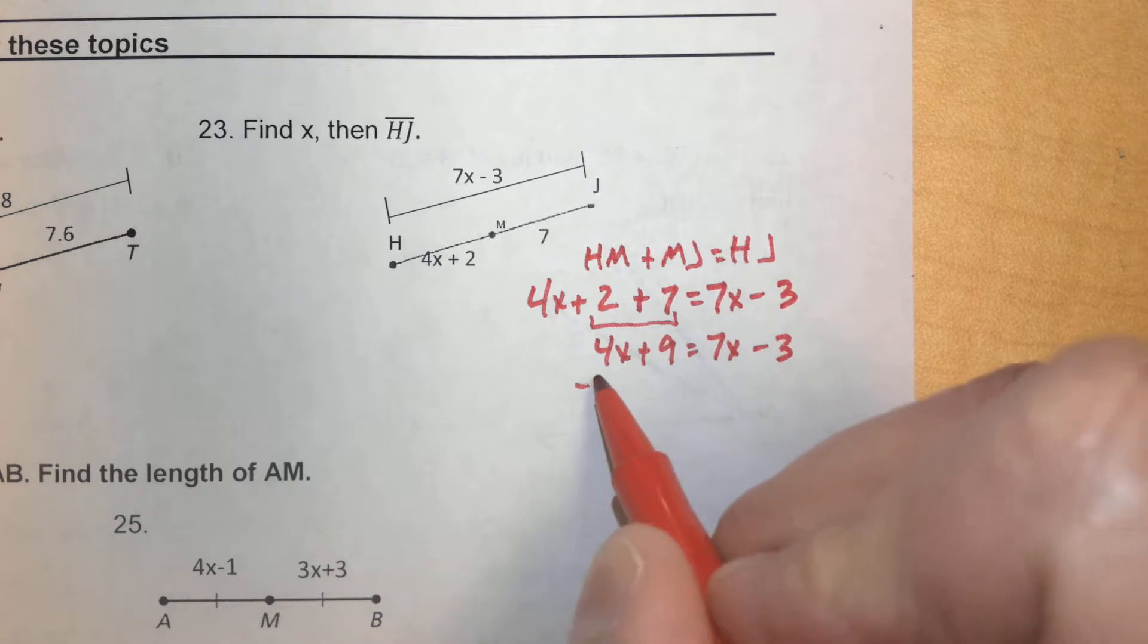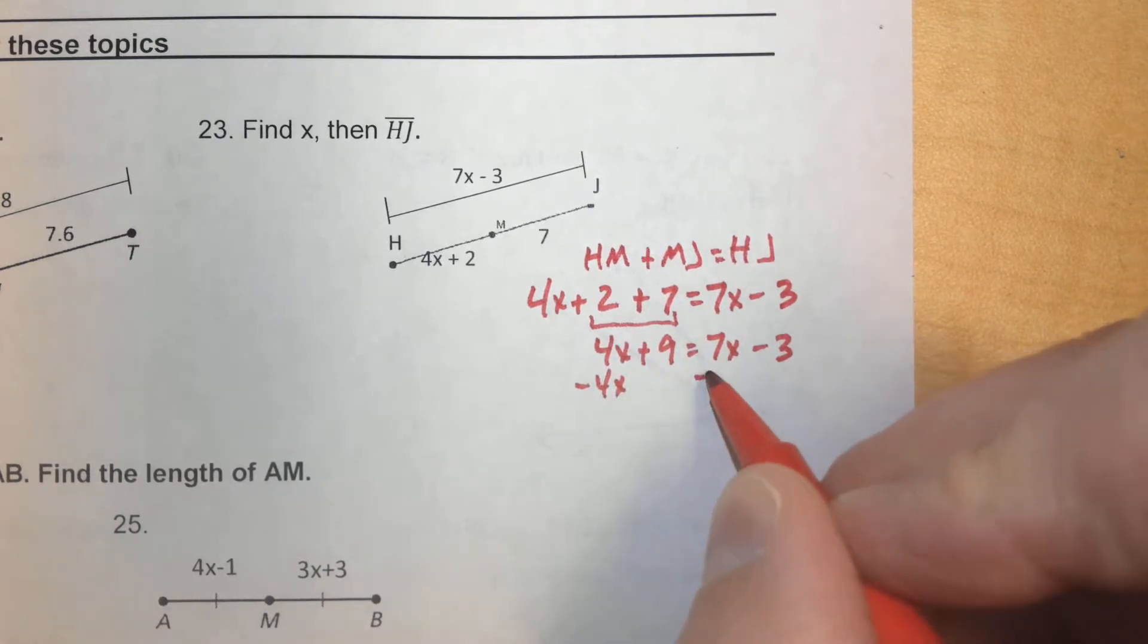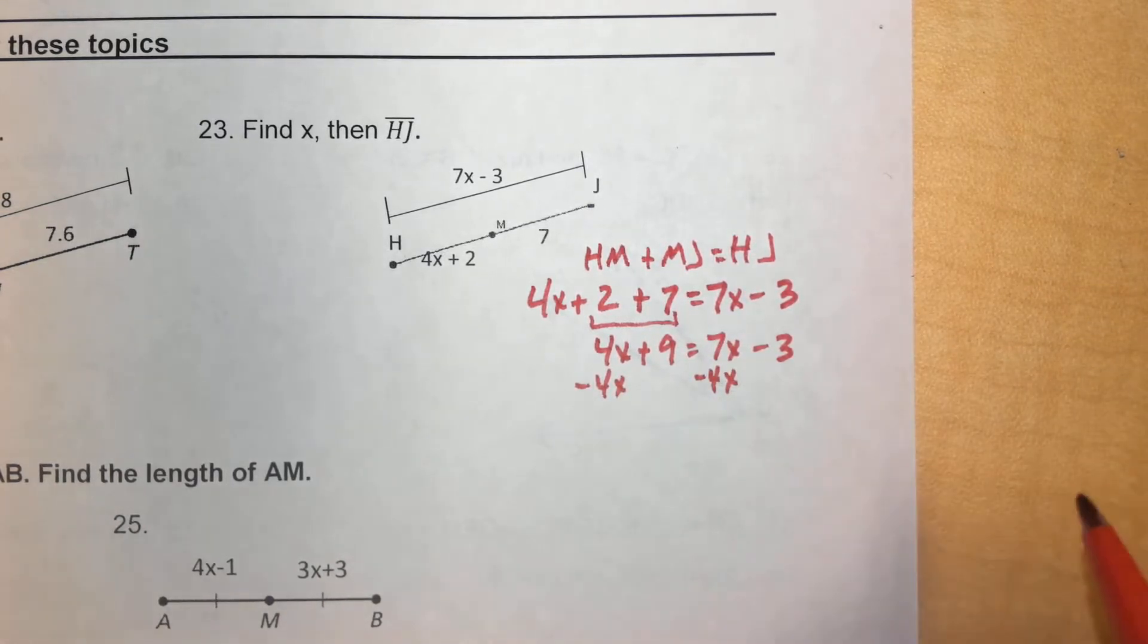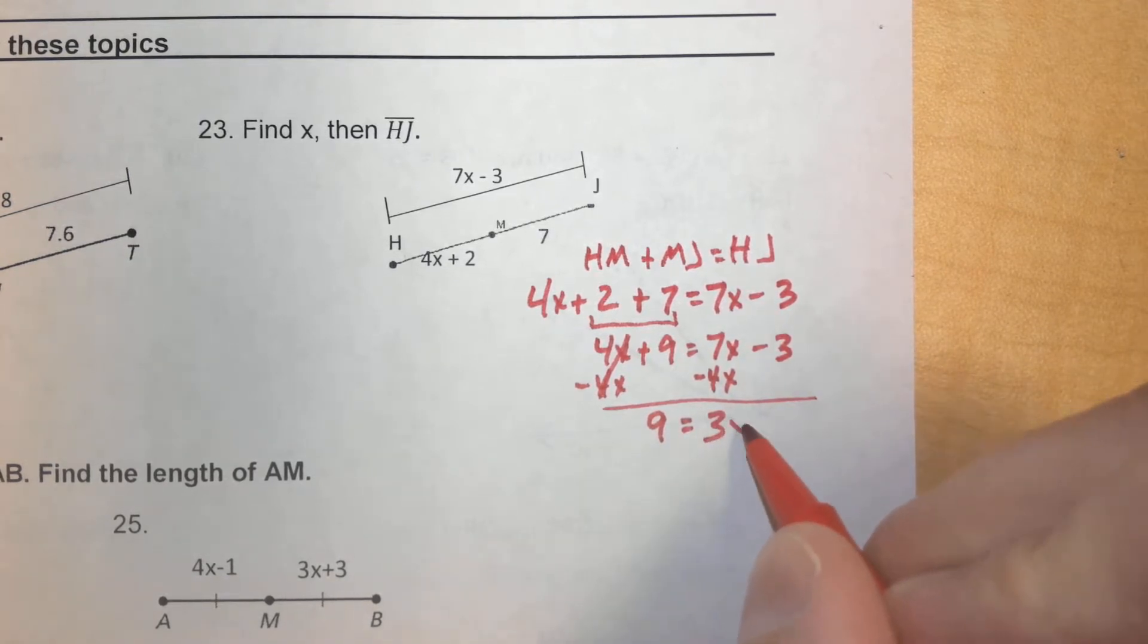So, we're going to cancel out the 4X over here. Remember, take the smaller X value away from the larger X value. That way, you don't have any negative X values. And once we cancel that out on this side, we're left with 9 equals 3X minus 3.